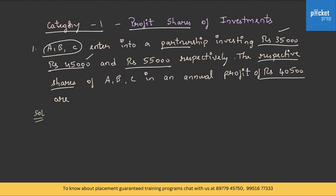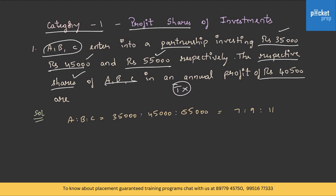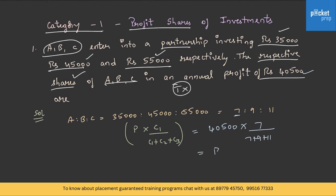First, let us convert these investments into ratio form. A:B:C = 35,000:45,000:55,000, which simplifies to 7:9:11. There is no time period given, so the formula is profit × C1/(C1+C2+C3). The annual profit is Rs. 40,500. For A's share: 40,500 × 7/(7+9+11) = Rs. 10,500.